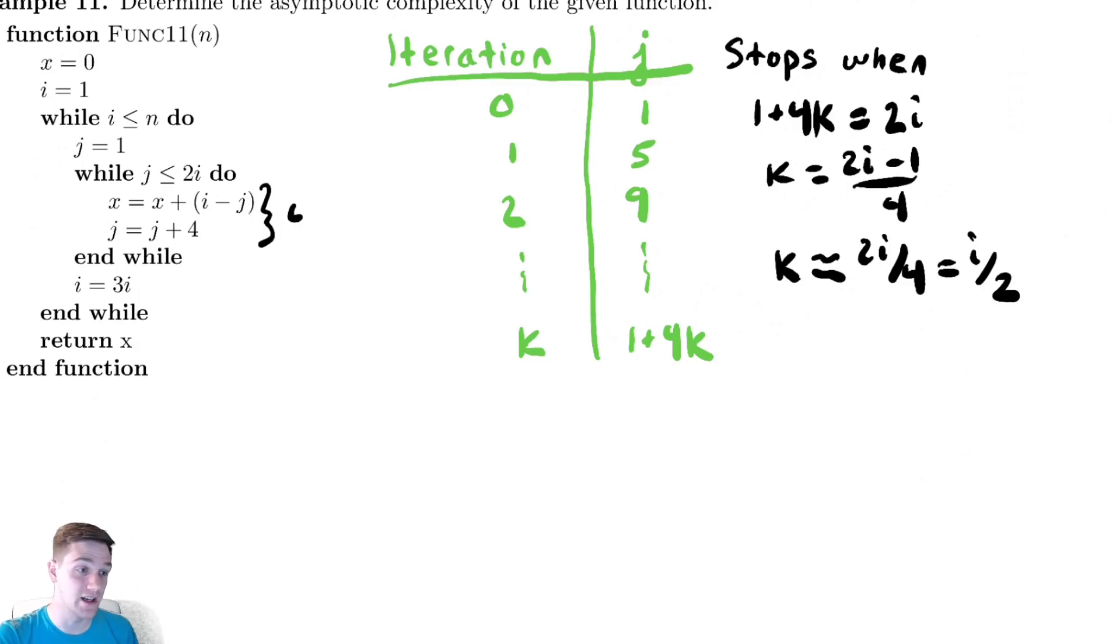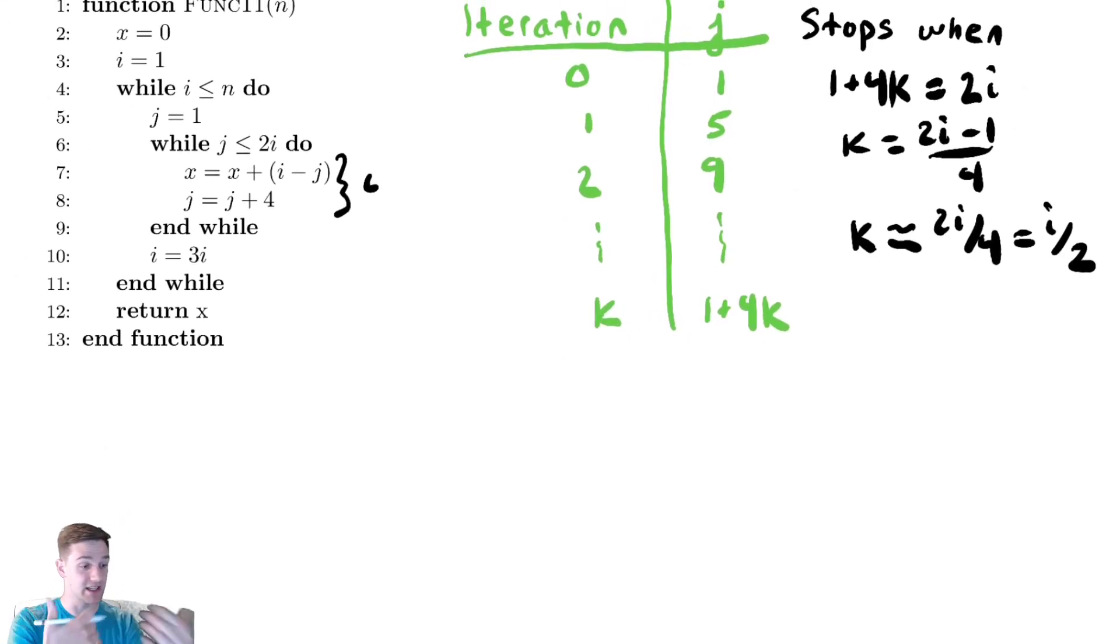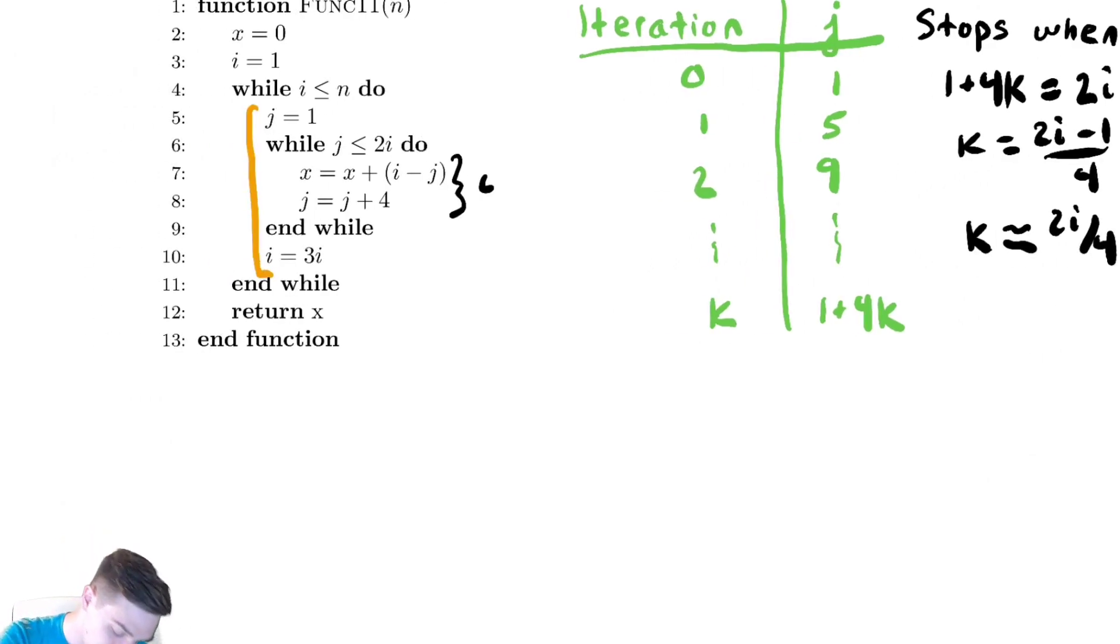Now, let us begin analyzing the outer while loop. First, we want to understand how long does it take to do one run of the outer while loop? Well, the body of the inner while loop lines 6 through 9 takes constant time, so running an entire instance of the outer while loop will take c i over 2 time.